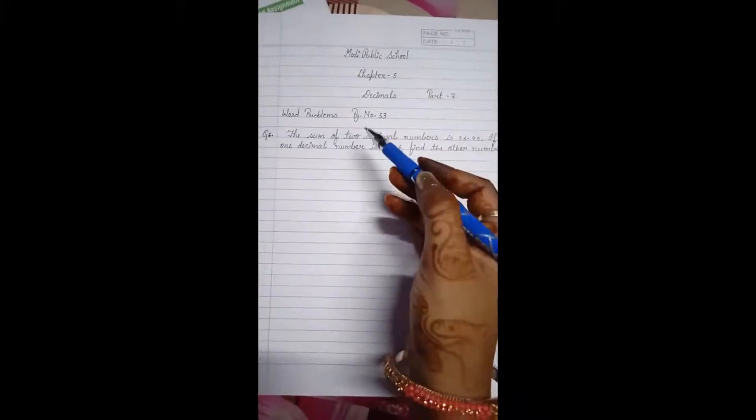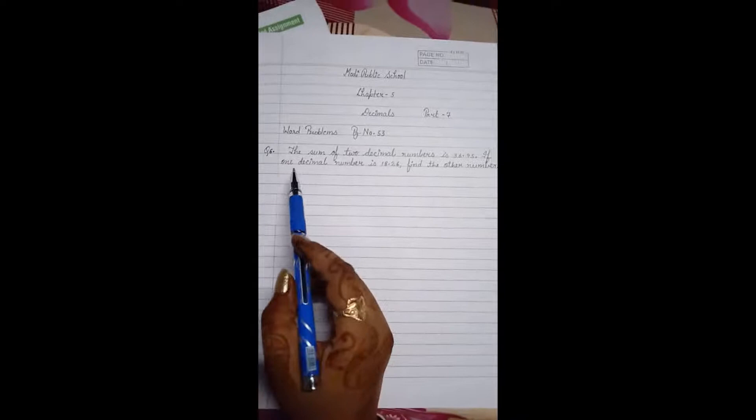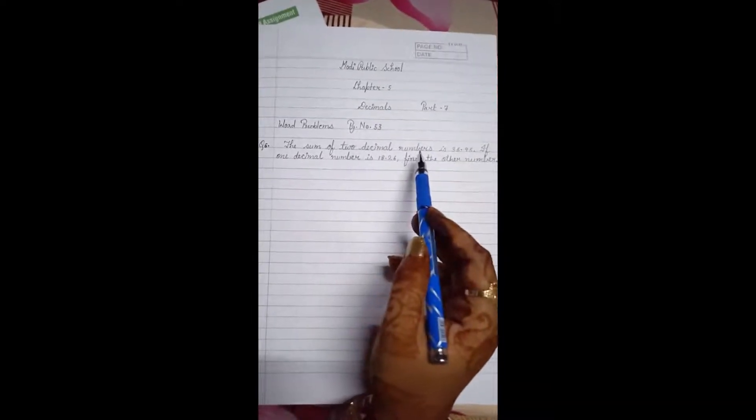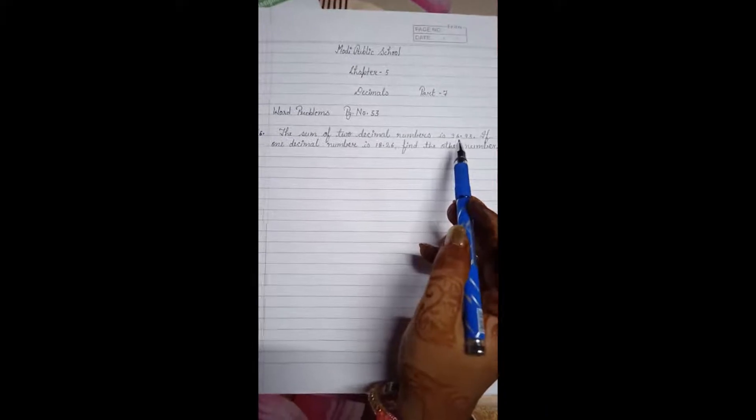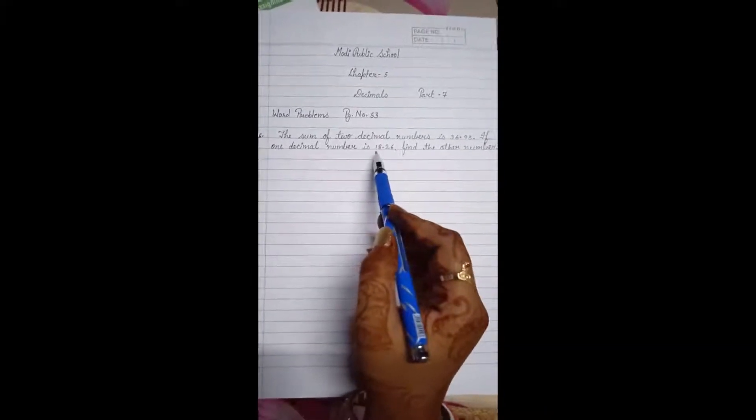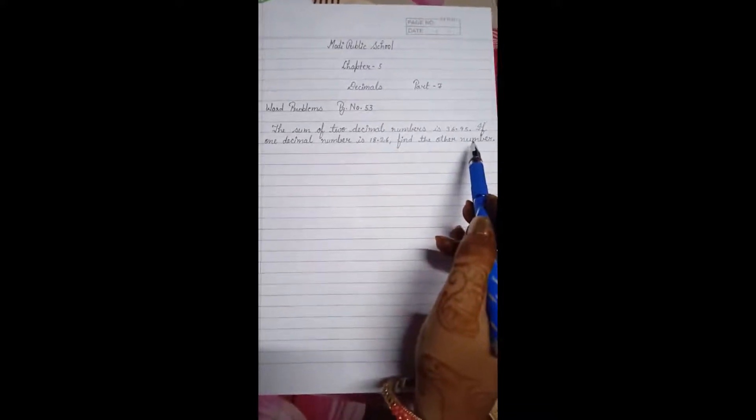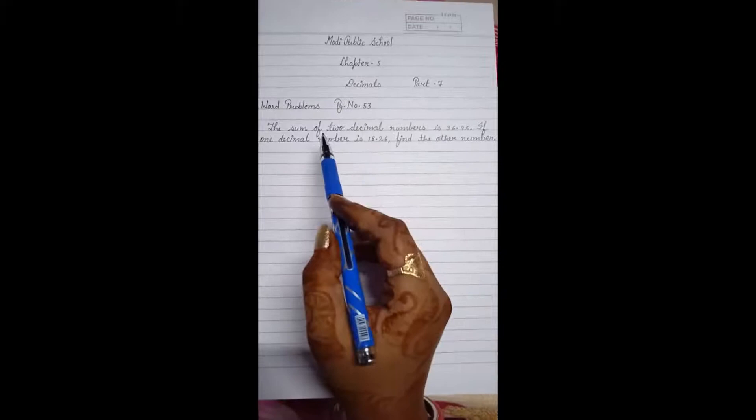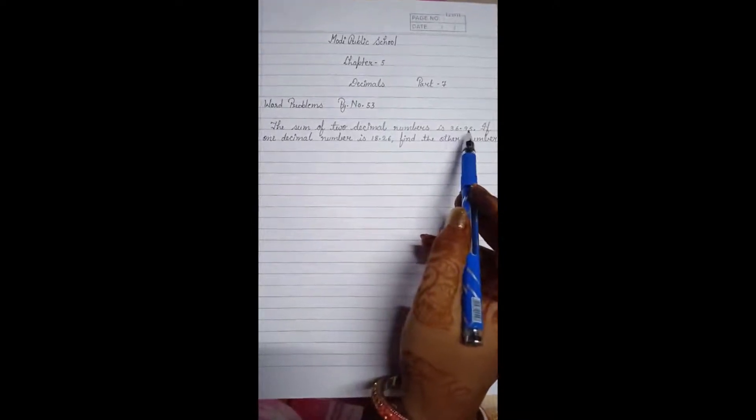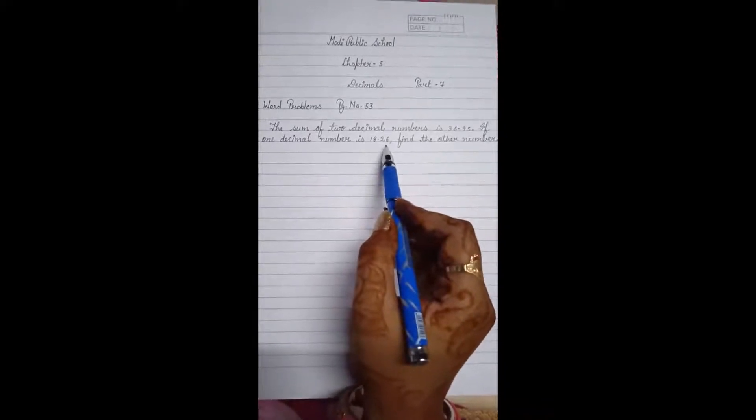This is page number 53 of your maths book. The question is, if the sum of two decimal numbers is 36.95, and one decimal number is 18.26, find the other number. Here it is given that sum of two decimal numbers is 36.95 and one of the decimal numbers is 18.26.